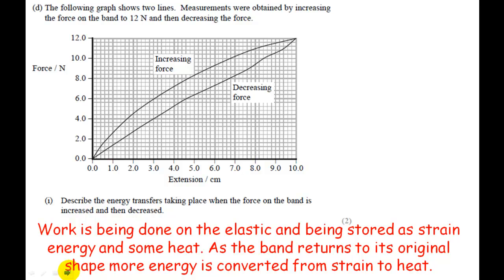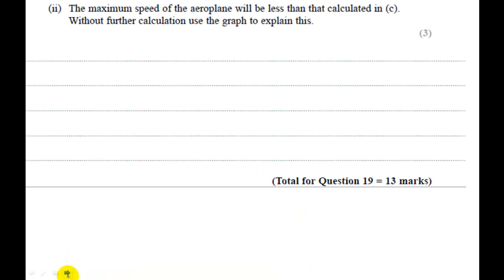And if you actually have the exam paper with you, you'd see that the next question goes much more into detail into this. Pause the video and read this question. So for this question, it says the maximum speed of the airplane will be less than that calculated in C. Without further calculation, use the graph to explain this.